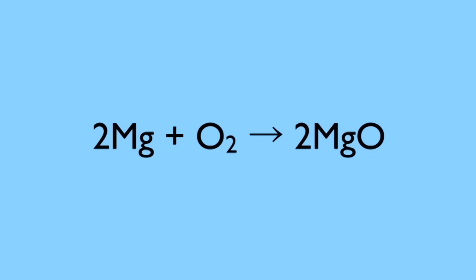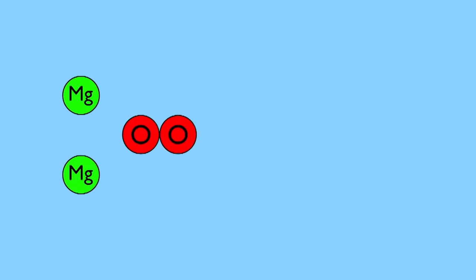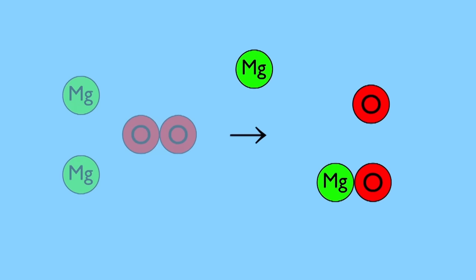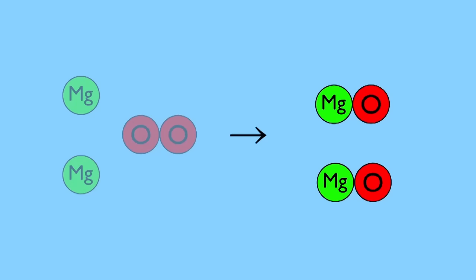It's easy to see this if we draw out the atoms rearranging themselves to form the products. You can see clearly that no atoms are gained or lost during a reaction, so the mass is conserved.